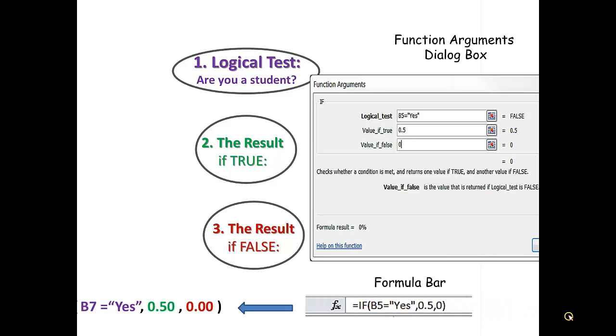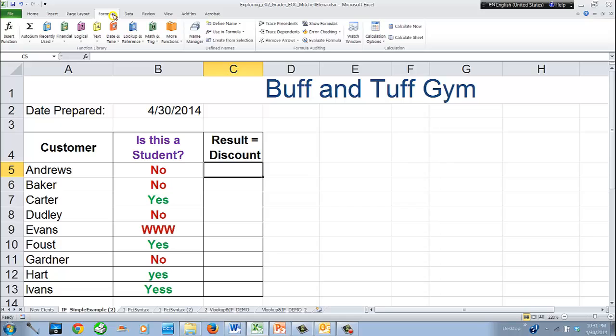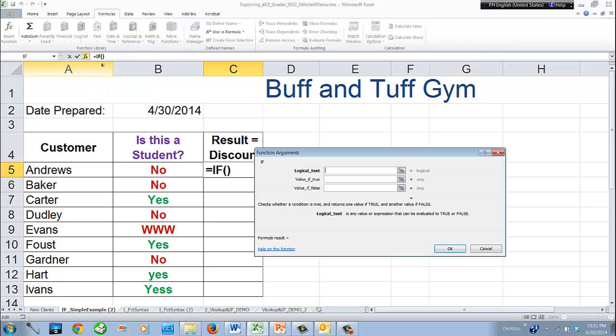Let's now complete this step in the Excel worksheet. Select cell C5 to construct the IF function for the customer Andrews. The IF function can be found on the ribbon in the Formulas tab in the Functions library under the Logical Functions. Select and click IF. The function arguments dialog box will open, and you can start typing the arguments as shown before.